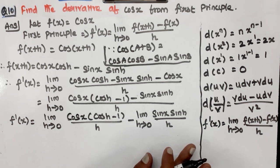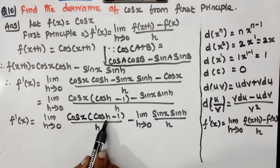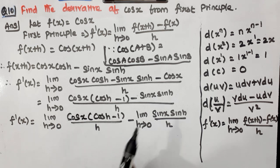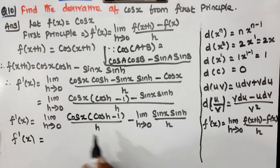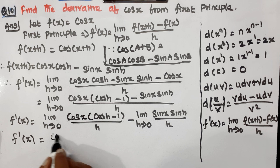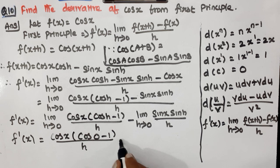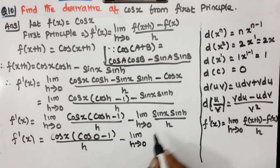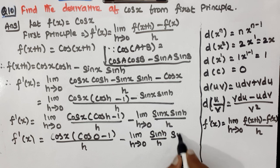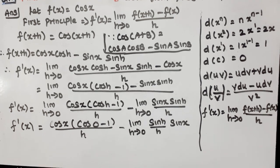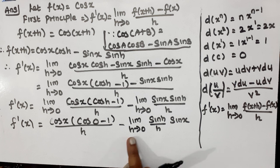Now, as h tends to 0, cos(0) = 1, so (cos h − 1)/h becomes (1 − 1)/h = 0. And we know that limit h tends to 0 of sin h / h = 1.